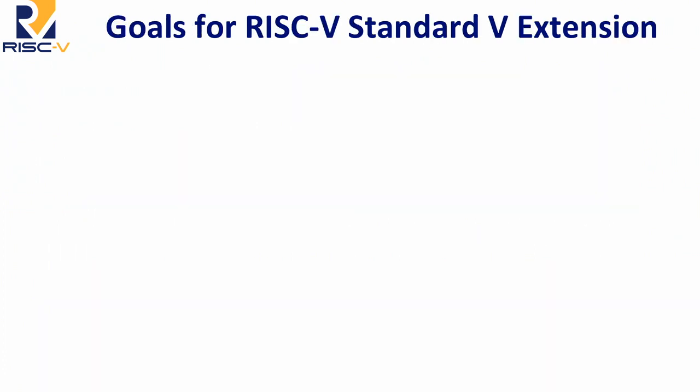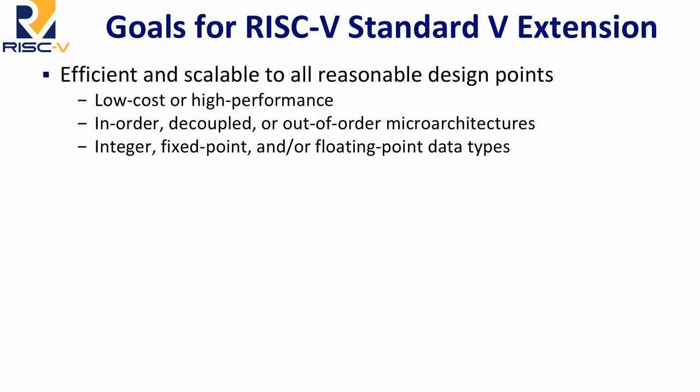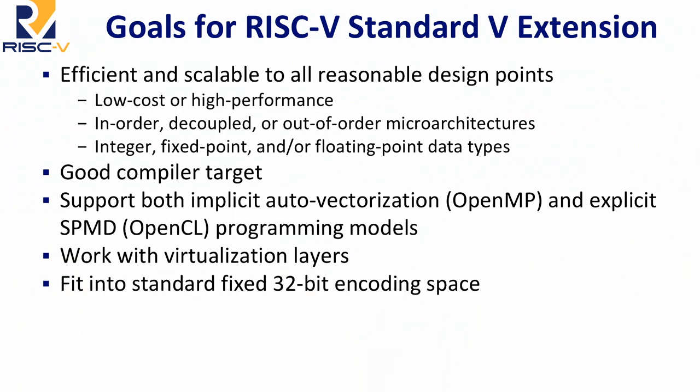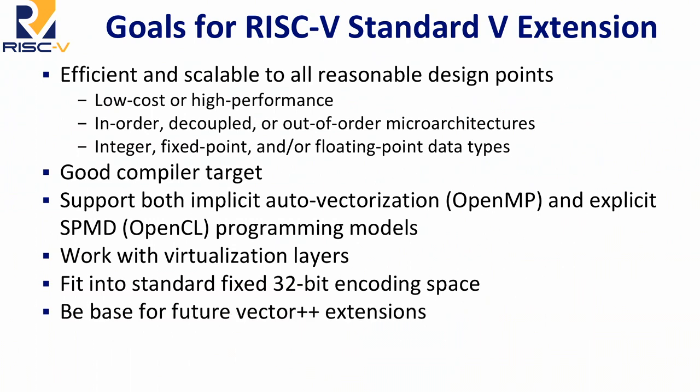The goals of this extension — I think I took this slide from a 2015 presentation — it has to be efficient and scalable for lots of design points: from low-cost, high-performance, in-order, decoupled, out-of-order, and cover a lot of data types. It needs to be a good compiler target, support both auto-vectorization-style compilation and explicit SPMD-style programming models, and work with OSes, virtualization layers. The other requirement was it had to fit in the standard fixed 32-bit encoding space and be a base for future extensions.